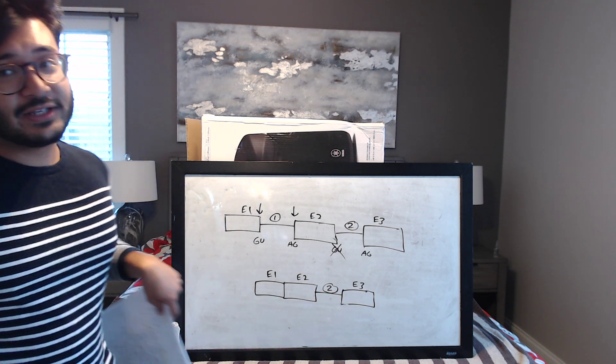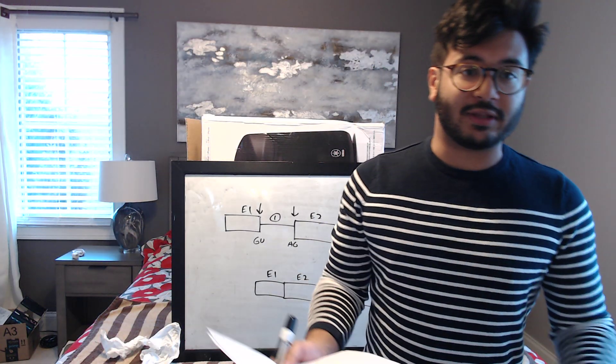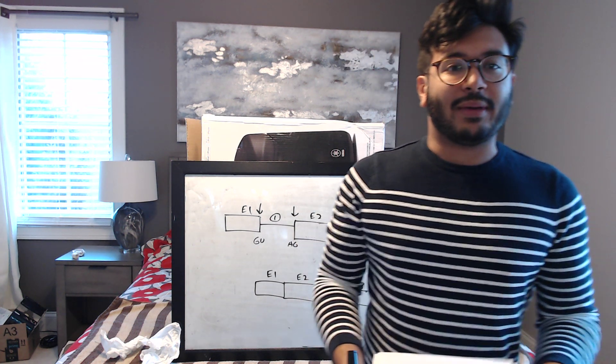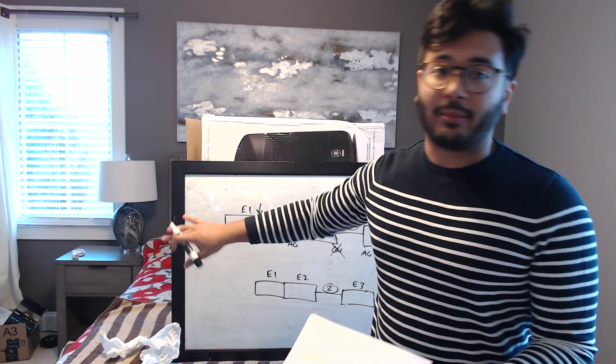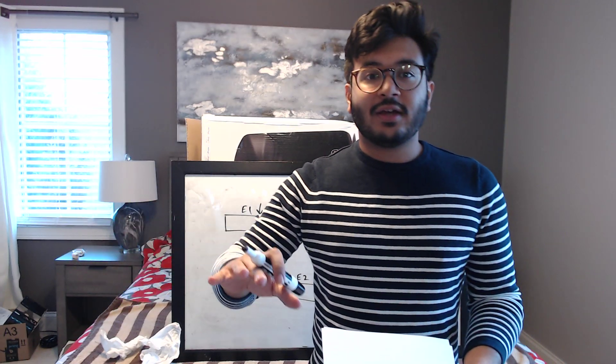Honestly, these aren't too hard — this is as hard as it gets with splice site mutations. If you can memorize 'give you a gift' for GU-AG, understand the splice site wording, and know how they might present it, that's all you really need to know. Hopefully that was helpful — thanks guys.